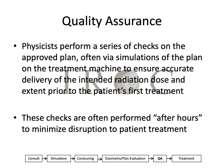Quality assurance is another very important part in the treatment plan process, and is something that's not always visible to physicians. Physicists perform a series of checks on each approved plan, often via dosimetric simulations of the plan on the treatment machine, to ensure accurate delivery of the intended radiation dose and extent prior to the patient's first treatment. These checks are often performed after hours — in the morning, during a lunch break, or in the evening — so that they don't disrupt the flow of patient treatments, particularly for complex plans such as IMRT or stereotactic treatments.